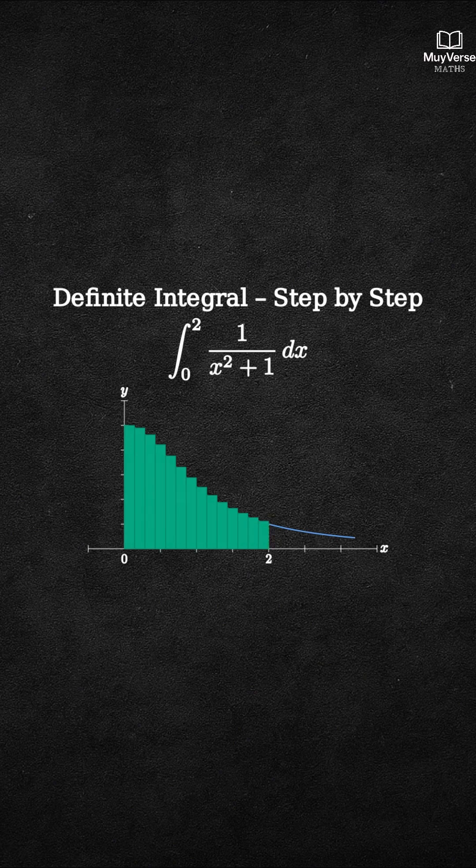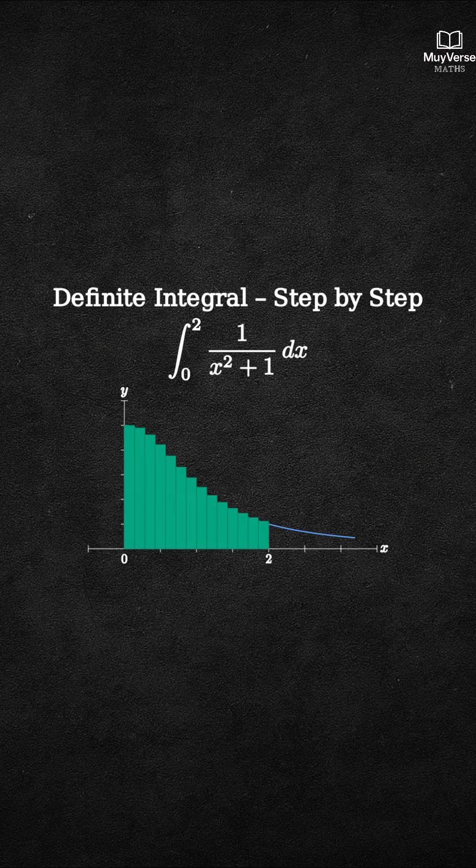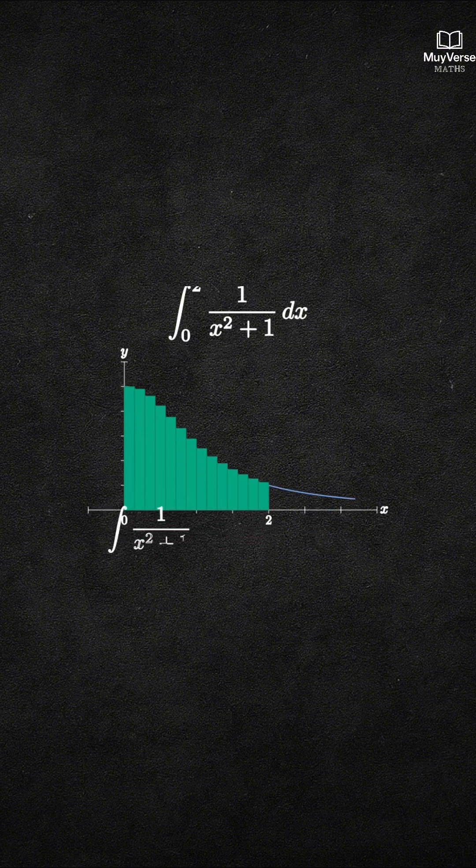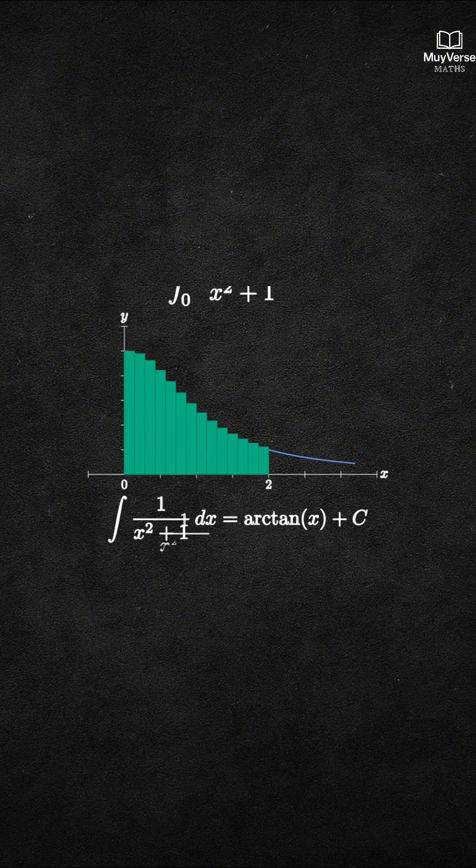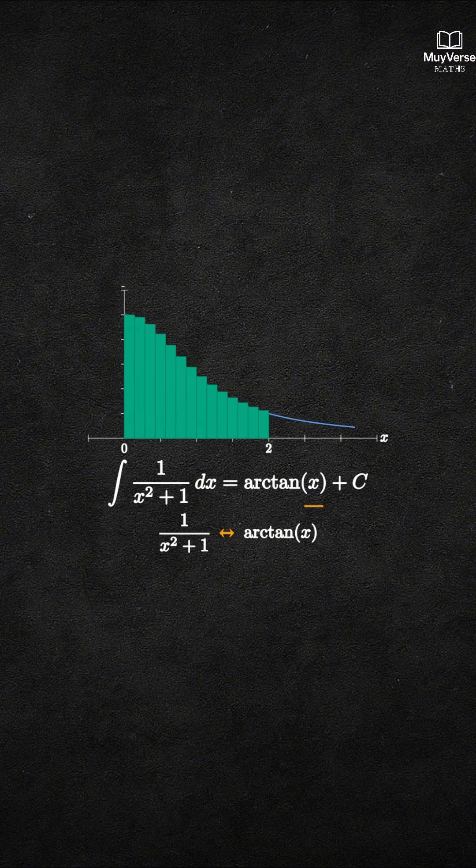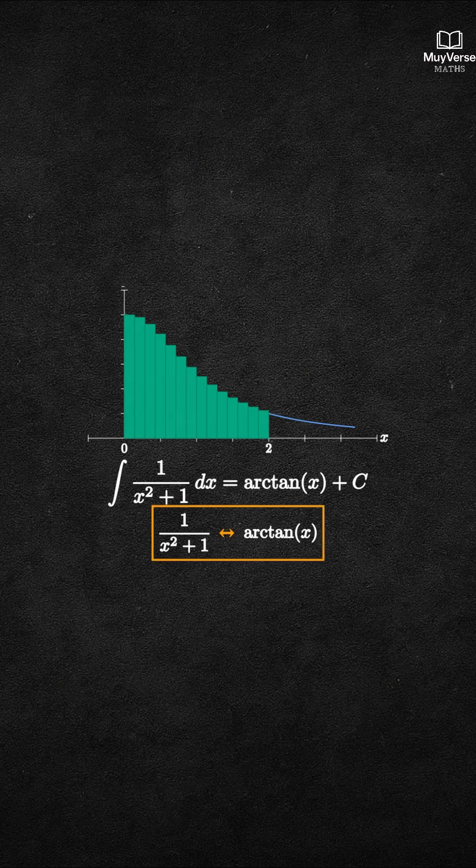Step 1. Find an antiderivative. The derivative of arctangent of x is 1 over x squared plus 1. So the indefinite integral of 1 over x squared plus 1, dx, is arctangent of x plus c.